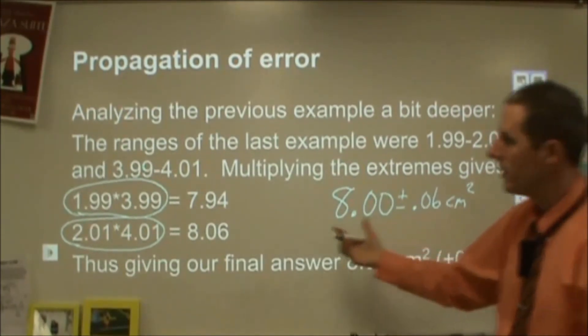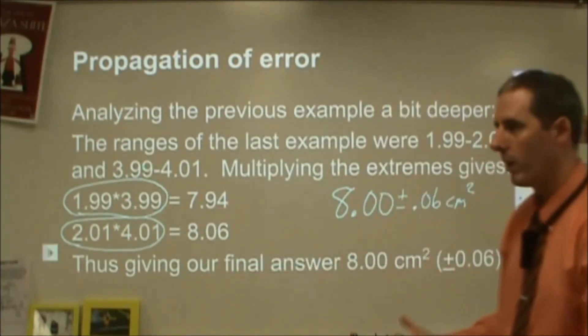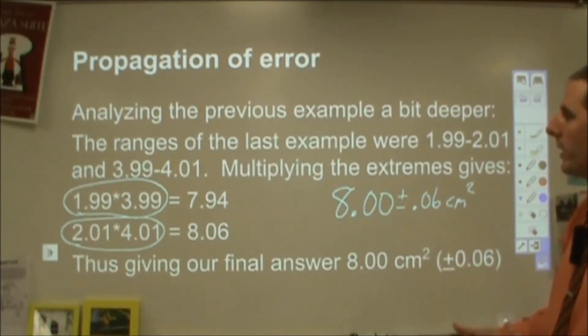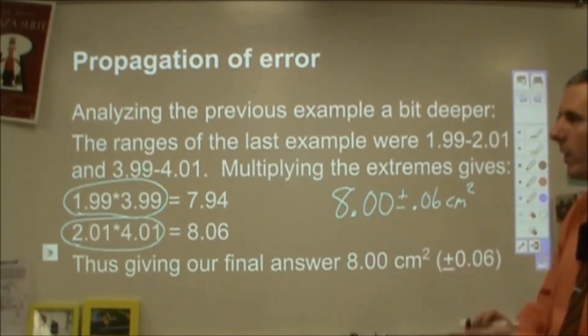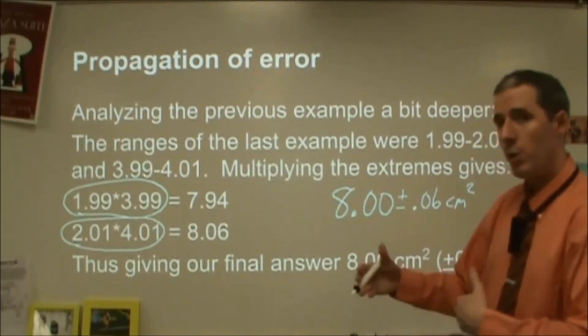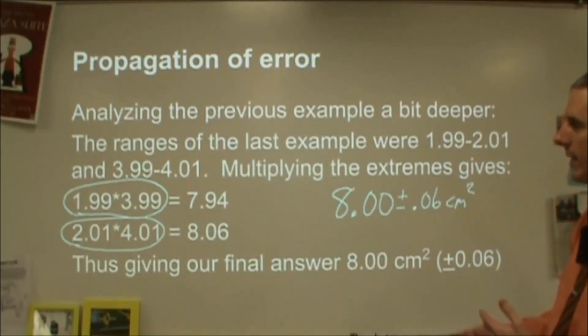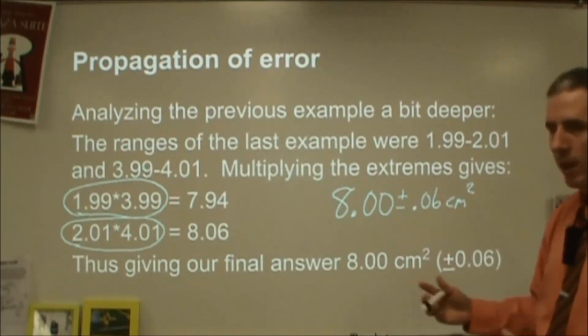And so we can see that this process that we're doing works for what we're ending up with. Now there is some rounding to this, but that's essentially the way that I would do these. Dividing would work the exact same. You would add the uncertainties and then apply them towards your final answer, and that would set you up for what your error would be.